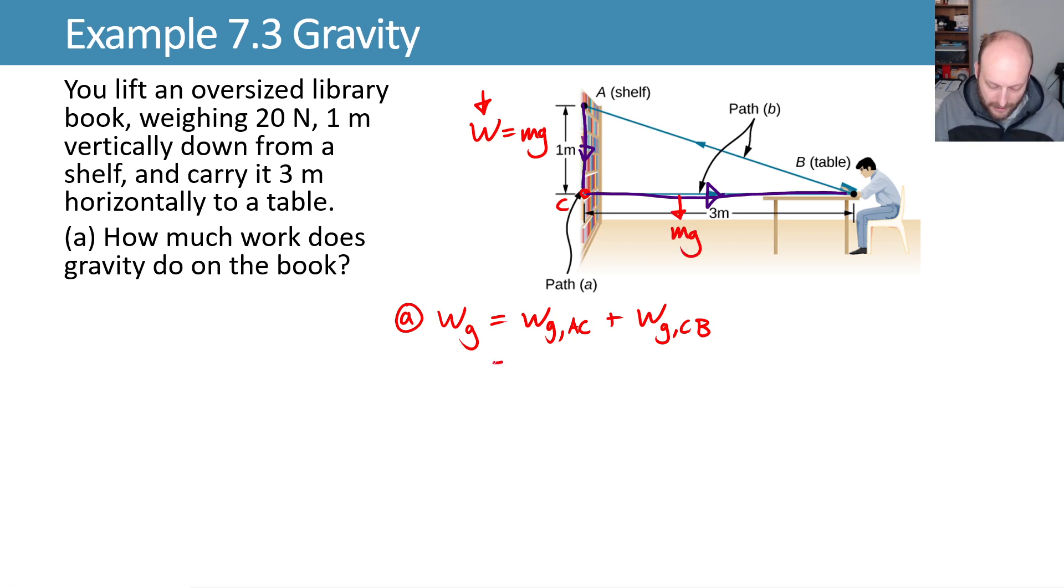So the work done by gravity is going to be the force of gravity, Mg, times the distance it's moving. Here's the distance from A to C, times the cosine of the angle between them.